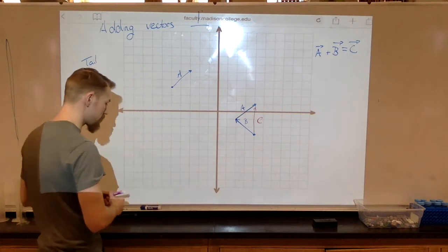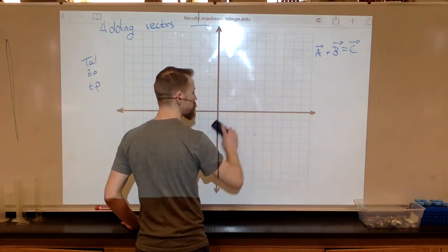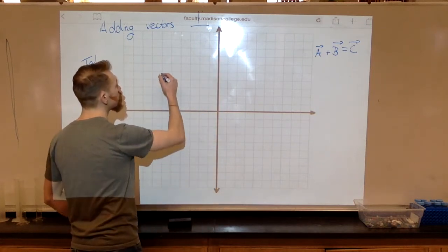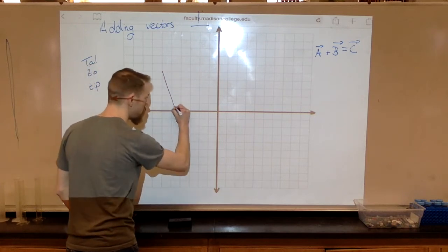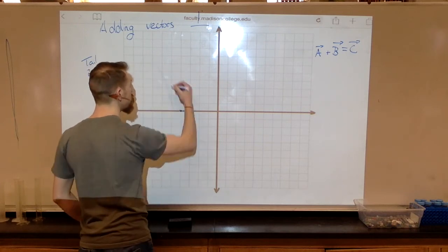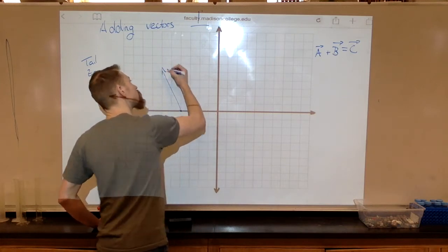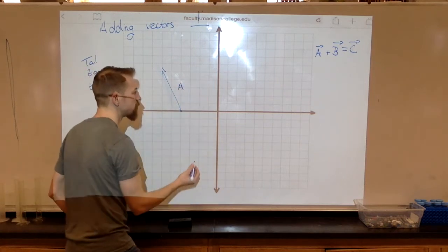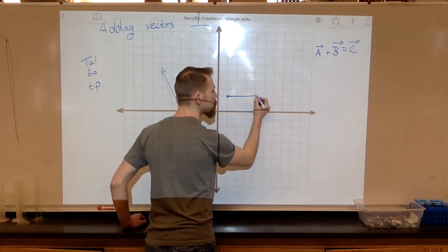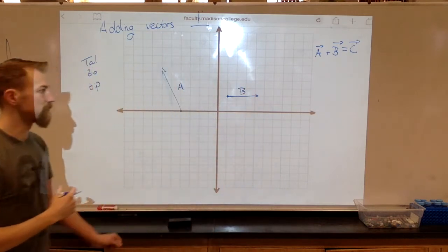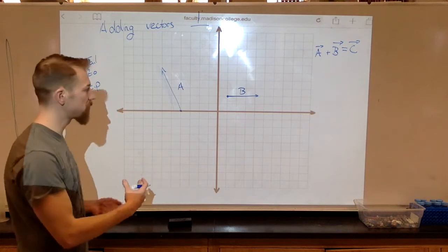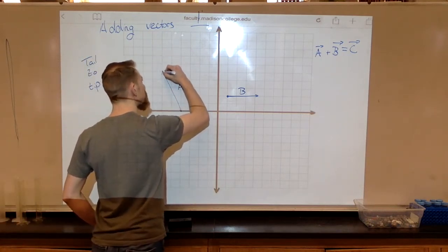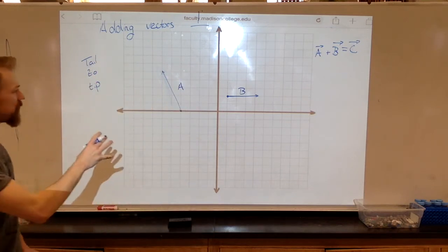I'll give you one more example using the parallelogram method. I have a really long and tall vector here. This is vector A, this will be vector B. And to add them together, I'll move one to the other, but we're going to use the parallelogram method. So let's make sure that my tip actually ends at the point. We're going to move B over to A.